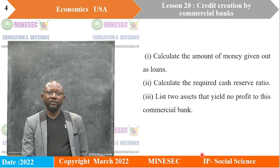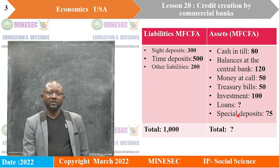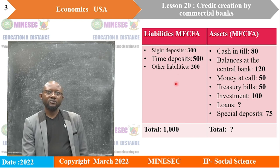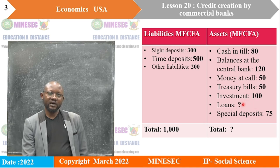Let's start right away with calculating the amount of money given out as loans. Before we do that, let's get back to the table. To get the amount given out as loans, we know that liabilities are always supposed to be the same as assets, implying that our total assets here should also be 1,000. And if it's 1,000, we'll take the total assets minus all the assets that have values. The answer will give us the amount for loans.